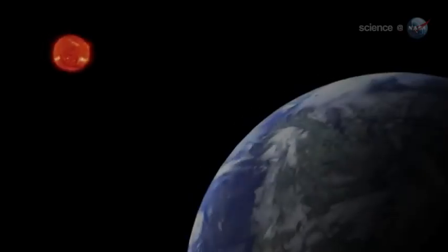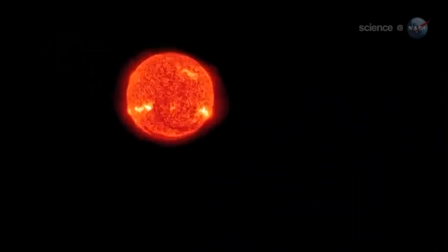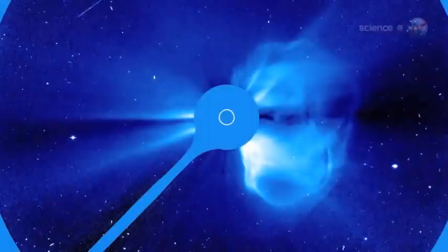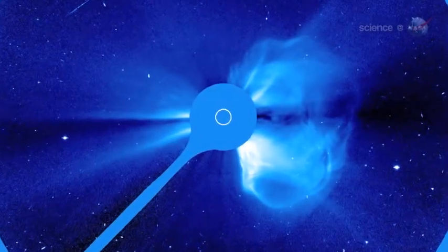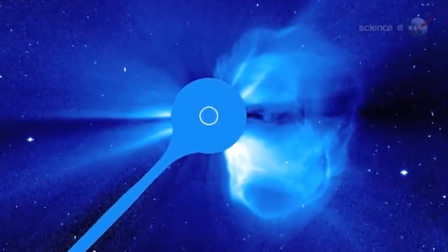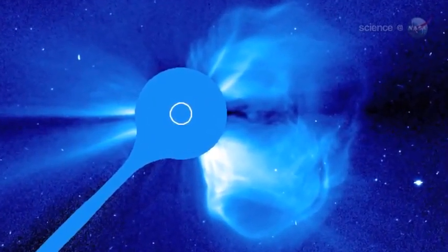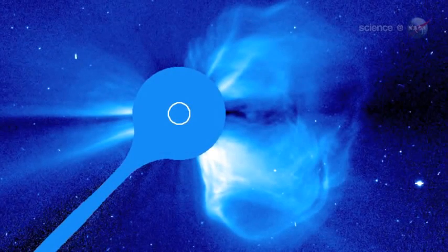Moreover, the battered planet orbits its star 97% closer than Earth orbits the sun. When it gets hit by clouds of plasma, or coronal mass ejections at such close range, the results could be as beautiful as they are terrifying.